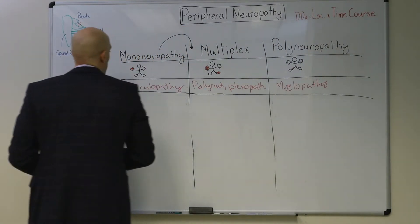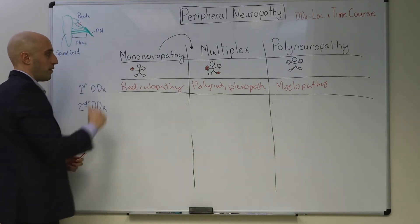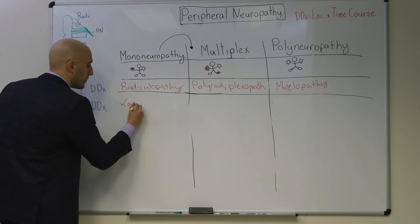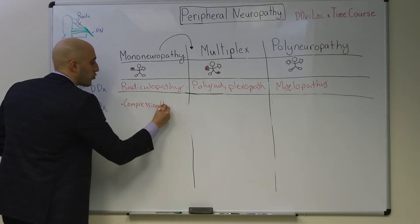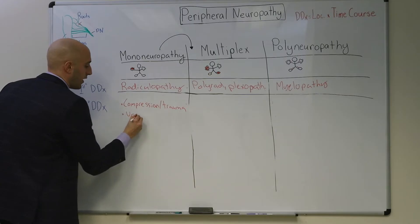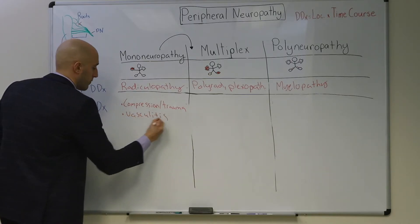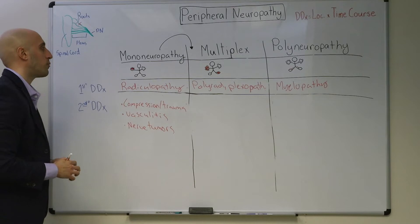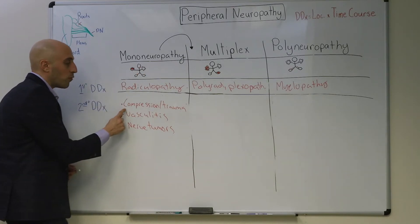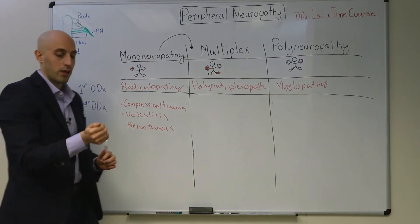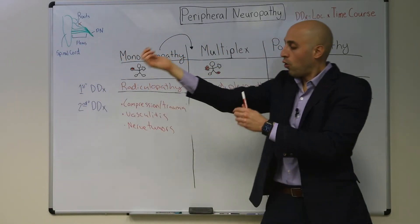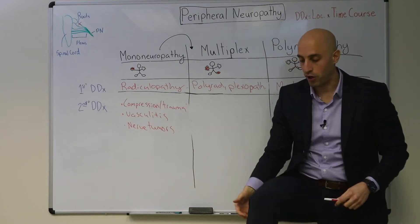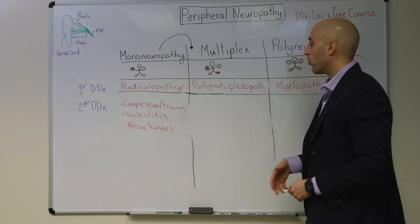Now let's say you've diagnosed your patient with mononeuropathy. What's the differential diagnosis? The most common cause is compression and trauma. Less common causes include vasculitis and nerve tumors. The nerves most vulnerable to presenting as mononeuropathy are those most vulnerable to compression — for example, the median nerve resulting in carpal tunnel syndrome, the ulnar nerve at the elbow resulting in ulnar neuropathy, or the peroneal nerve at the fibular head resulting in peroneal neuropathy.